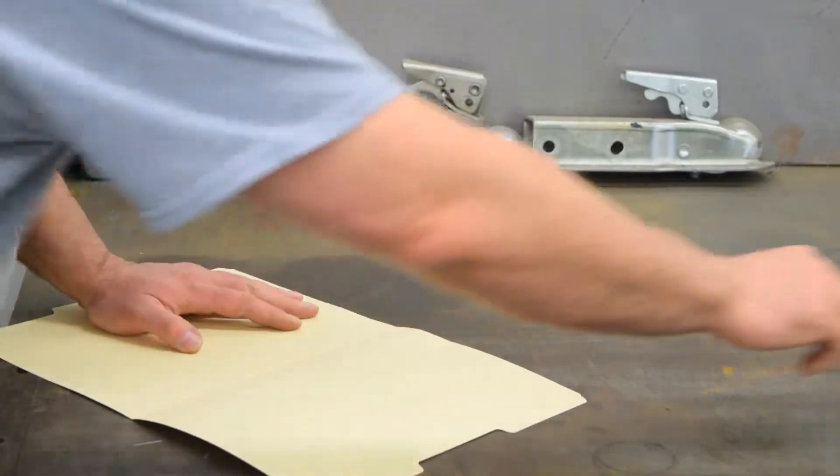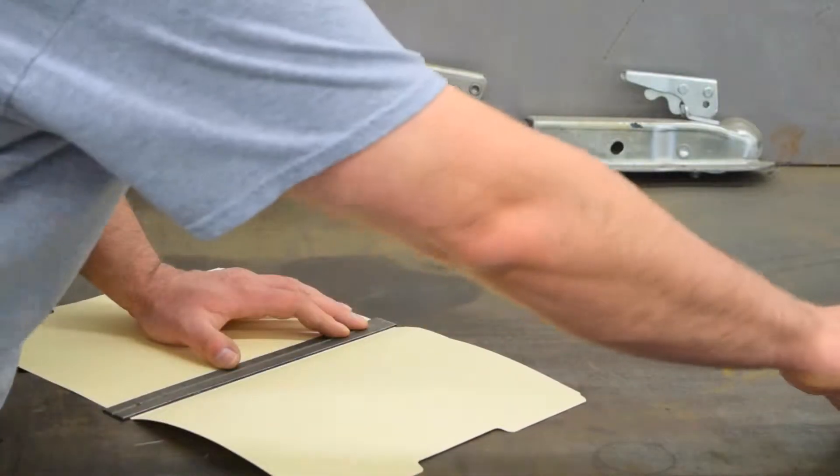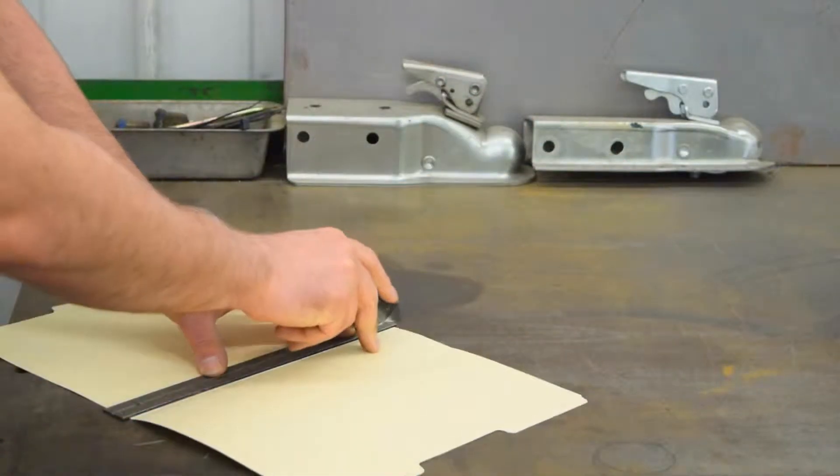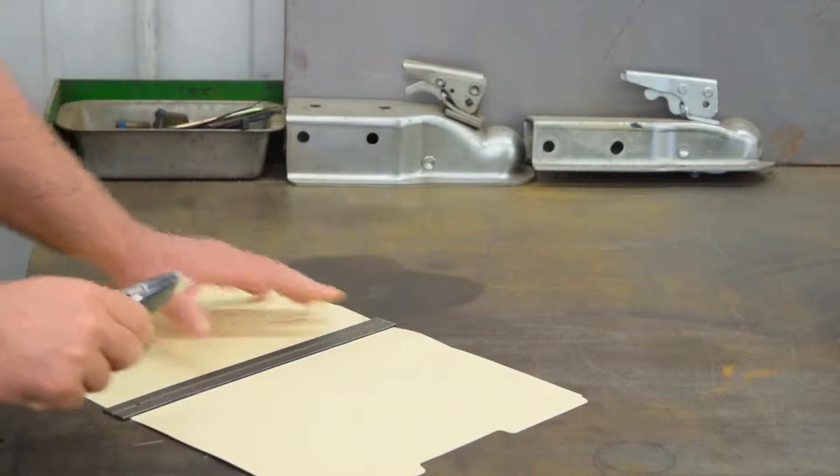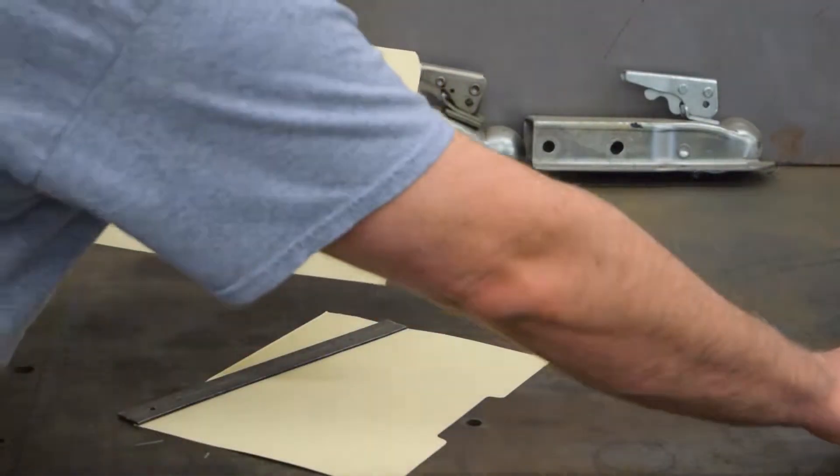So we're going to take a straight edge, put it right on here, just take a regular utility knife and turn that into the card stock that you need to do the project.